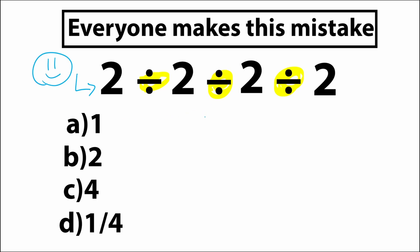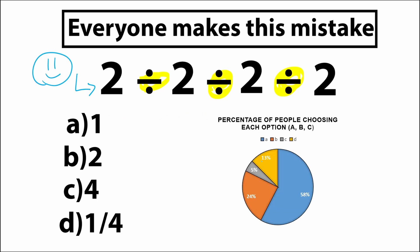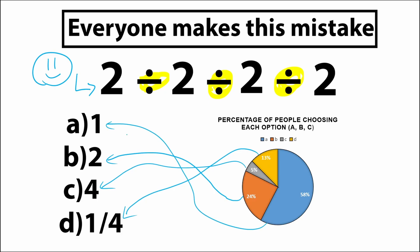Before the video I made a quick poll, and here's the result. So 13% of people think the correct answer is option D, 5% of people think the correct answer is option C, 24% of people think the correct answer is option B, and 58% of people think A is the correct answer. This is a very tricky moment, because people's answers were split between two options, A and B.